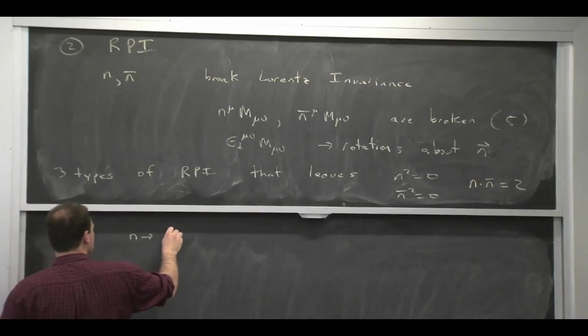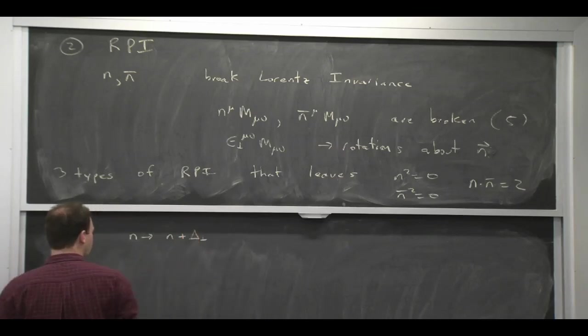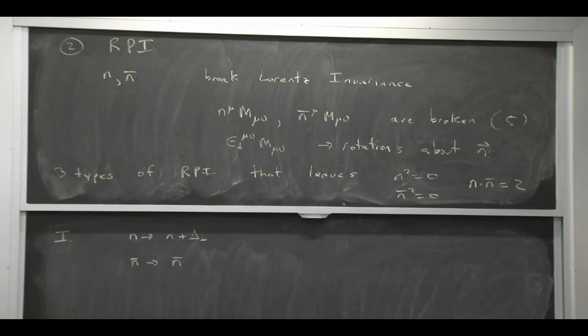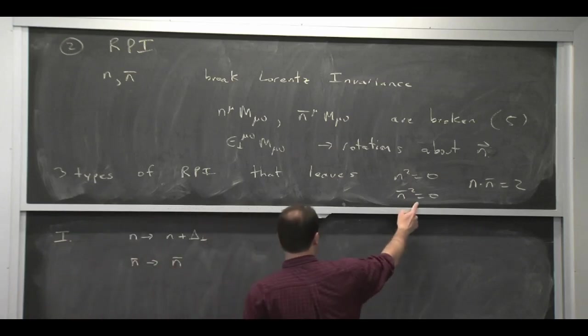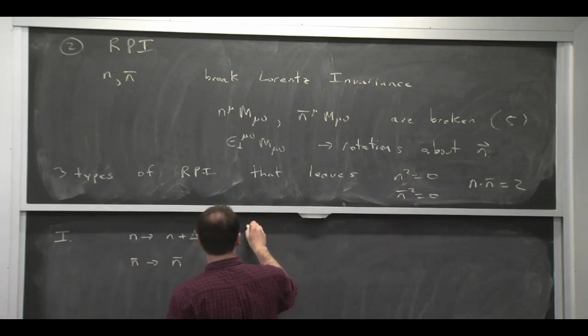Well, we could take n and we could change it by some amount in the perp direction and leave n bar unchanged. And since n bar dot something perp is zero, that would satisfy this. Or we could do the opposite. That would be type two.